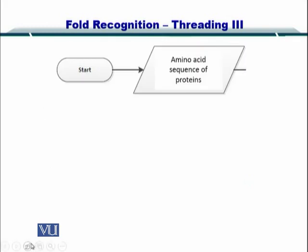So you have your amino acid sequence of the protein. This is the protein whose structure is unknown — structure is unknown, sequence is known.